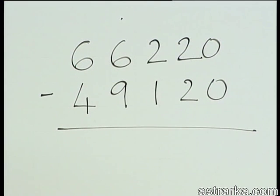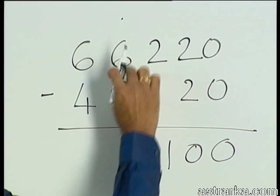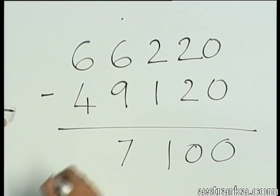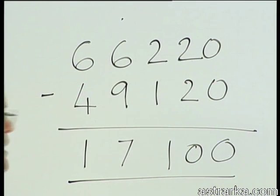Right. 0 0 1, difference is 3, difference is 2, and the answer is 17100. Okay.